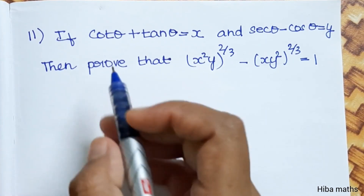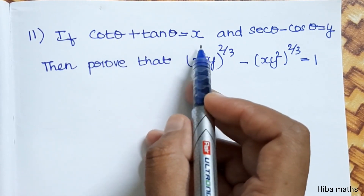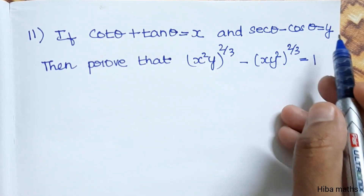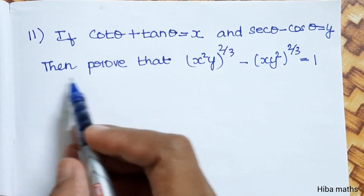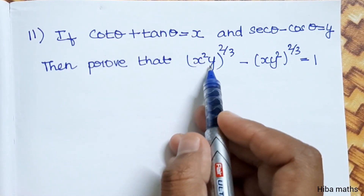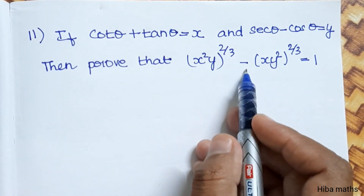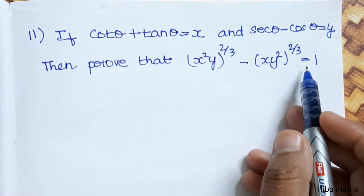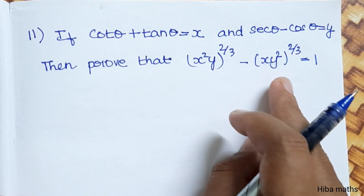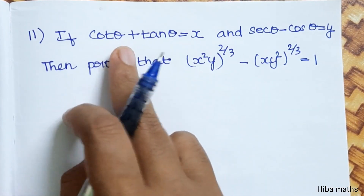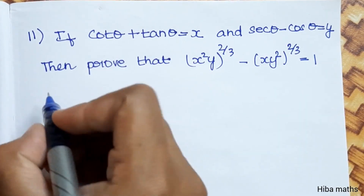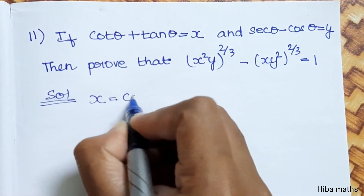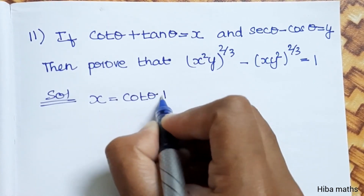Second subdivision: if cos²β + tan²β equals x and sec²β minus cos²β equals y, then prove that x²y^(2/3) minus xy²^(2/3) equals 1.